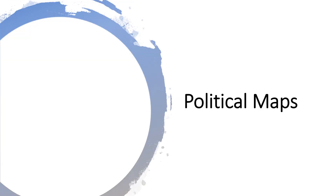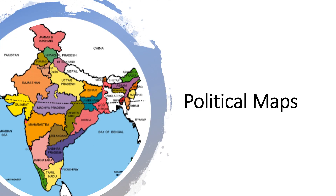Then what are political maps? Political maps show boundaries and locations of countries, states, union territories, capitals, and cities.